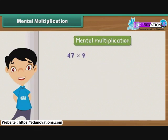To multiply a number by 9, multiply it by 10 first and then subtract the number itself from the result. For example, to multiply 47 by 9, first multiply 47 by 10 to get 470.